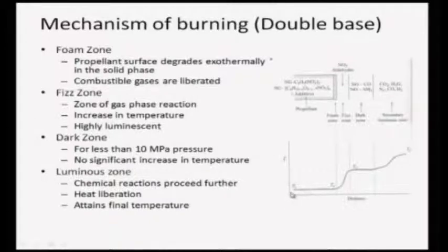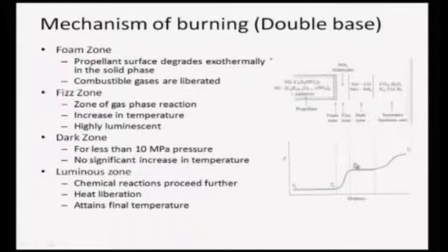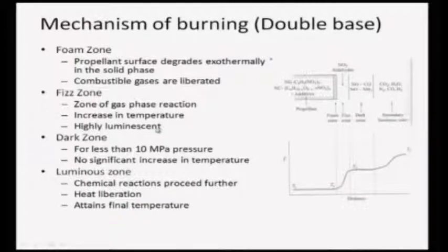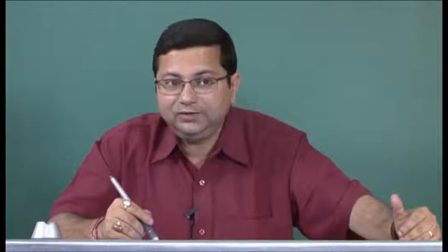In the phase zone the actual reaction takes place because both fuel and oxidizer are present in vapor, and they mix and burn. Looking at the temperature plot: the temperature is the same initially, then close to the surface there is a slight increase, then in the phase zone there is a substantial increase to temperature T1. This zone of gas phase reaction is highly luminescent - most of the flame color comes from this zone, and most of the radicals are present there.